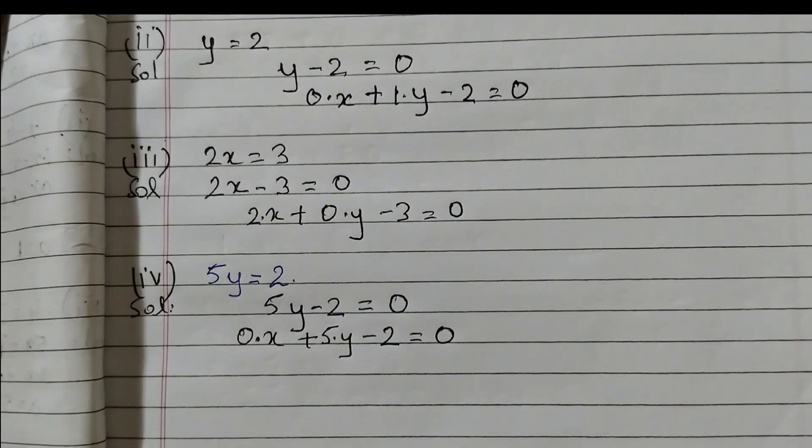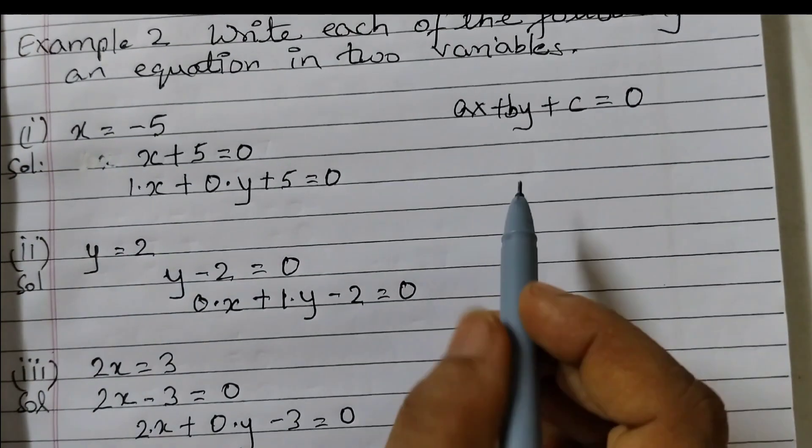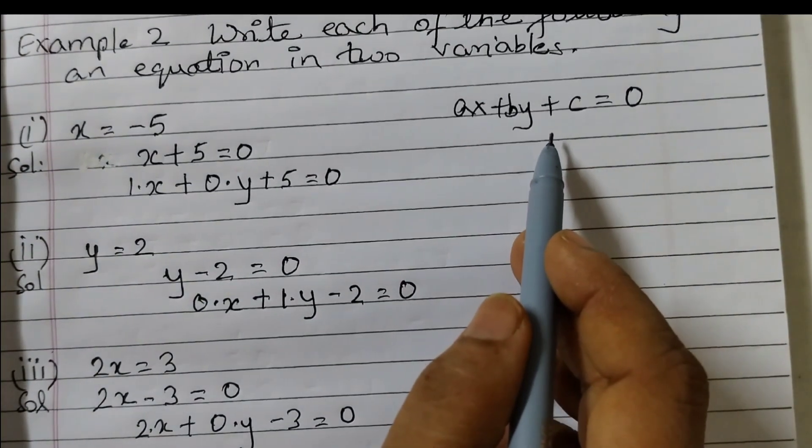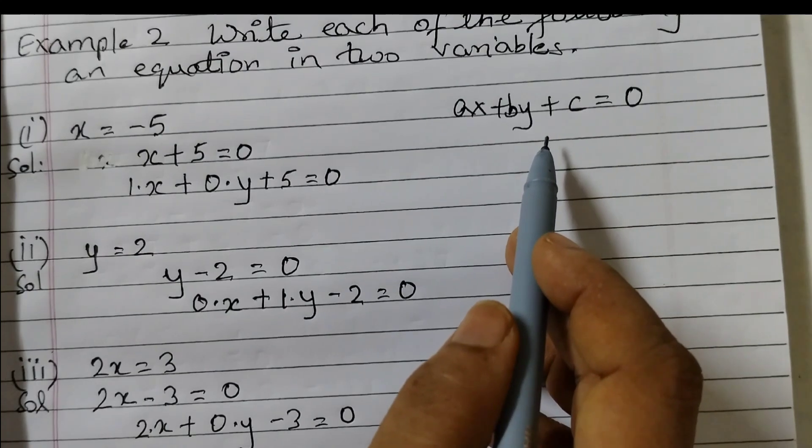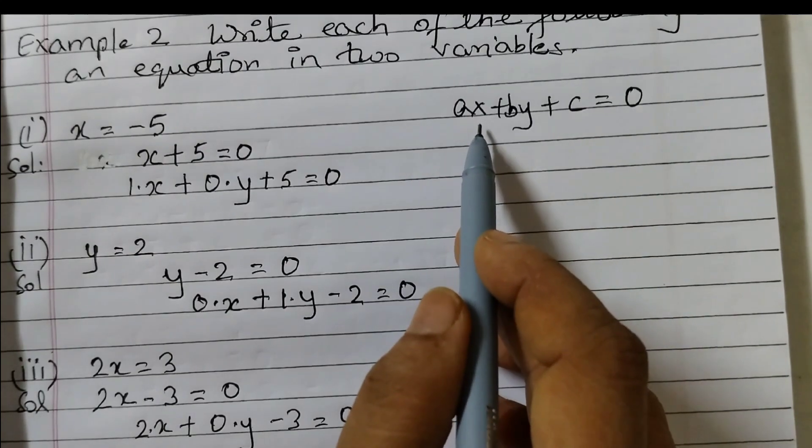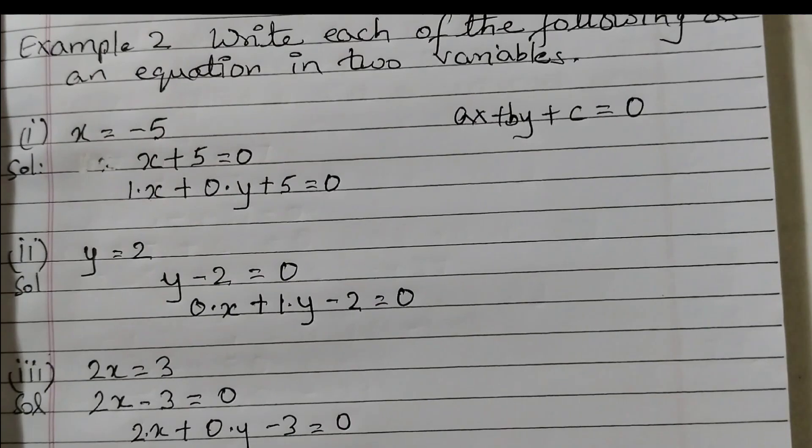So this was a very simple question, all you need to do is just write it in this form. The term which is missing you can just take 0 and if there is no coefficient before the variable that is 1. That's all for now, see you all in the next video.